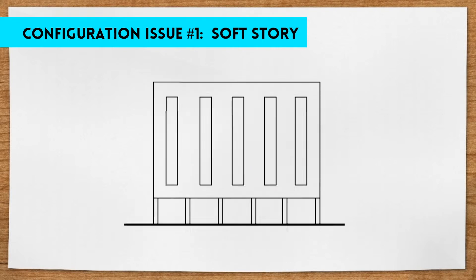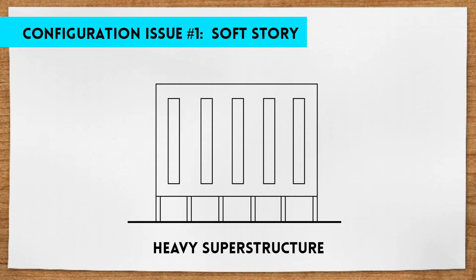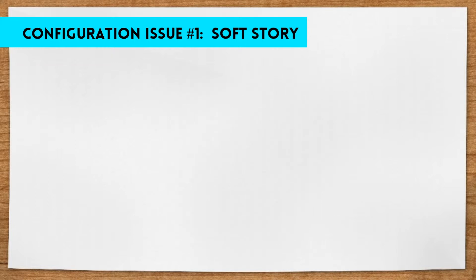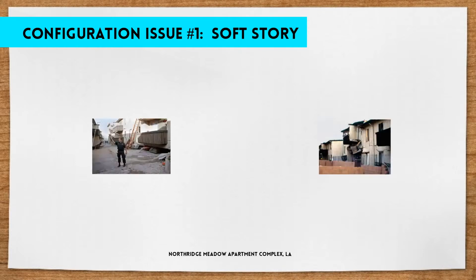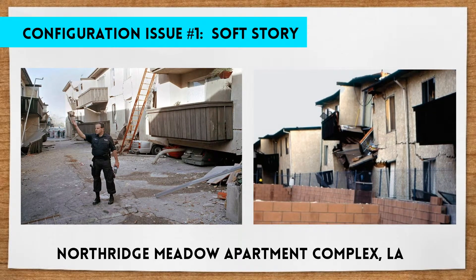The last type of soft story is known as the heavy superstructure. This is created by an open first floor with few supporting walls or columns supporting a heavy structure above it. A famous example of a soft story gone wrong is the Northridge Meadow apartment complex in LA. It had an open ground floor used for car parking, which created a soft story, and during a 1994 earthquake it resulted in complete collapse of the structure.